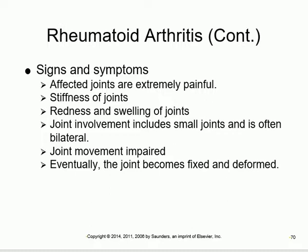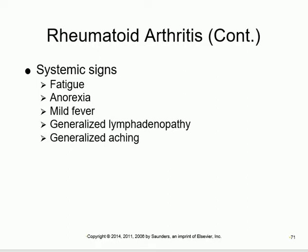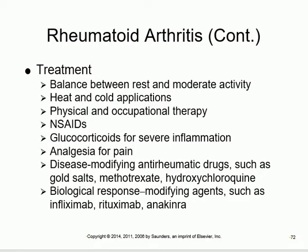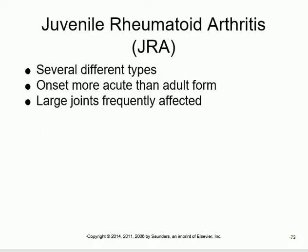Treatment of RA includes exercise, activities, occupational therapy, physiotherapy, NSAIDs like ibuprofen, and analgesics. There are also DMARDs - disease-modifying antirheumatic drugs. Treatment is not the most important focus here, but these are the main options.